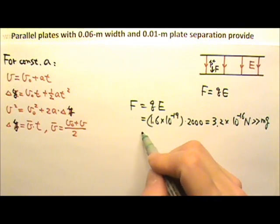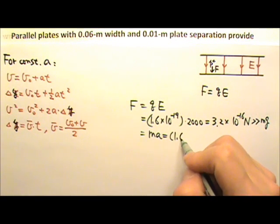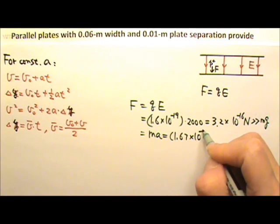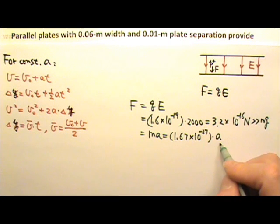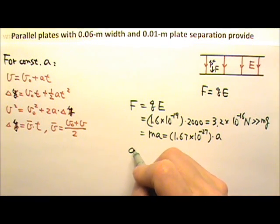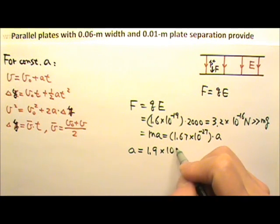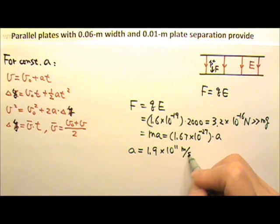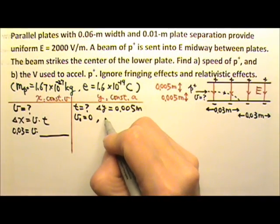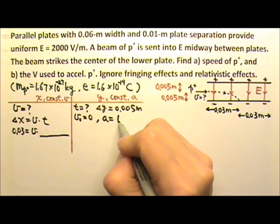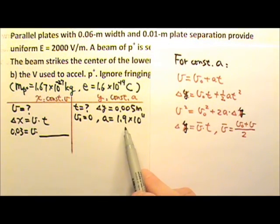And F equals ma, the mass of the proton is 1.67 times 10 to the negative 27th, and then times a, and we just set this equal to that, and we can find the a, the acceleration. You'll find it is 1.9 times 10 to the 11th meters per second squared. So now we have the third thing we know for the y direction. The acceleration is 1.9 times 10 to the 11th.